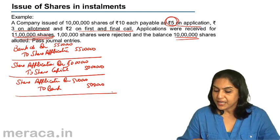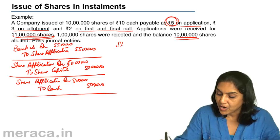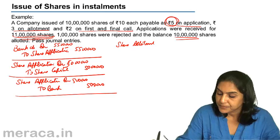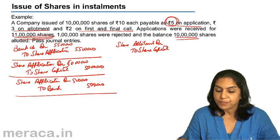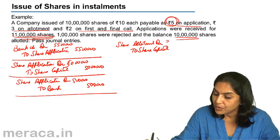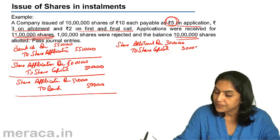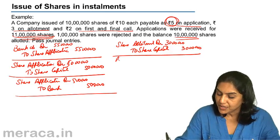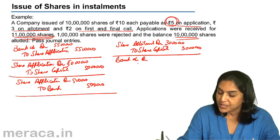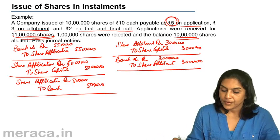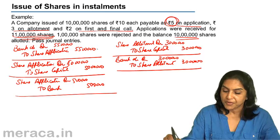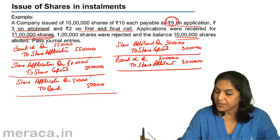Next, allotment money becomes due. The entry is: share allotment account debit to share capital. The amount is ₹3 per share on 10 lakh shares, so ₹30 lakhs. Assuming the entire money is received, the entry is bank account debit to share allotment — ₹30 lakhs — and the share allotment account gets closed. The share application account is also closed: ₹55 lakh debit, ₹50 lakh and ₹5 lakh credit.